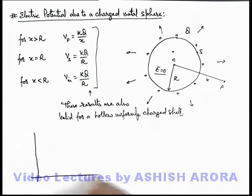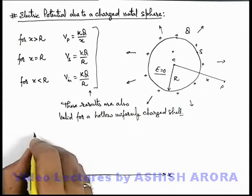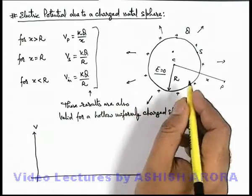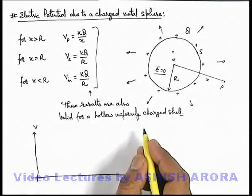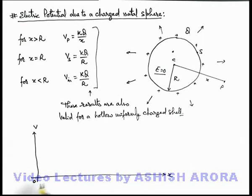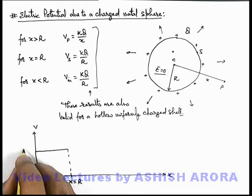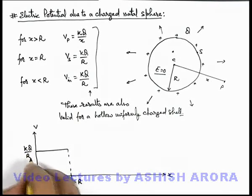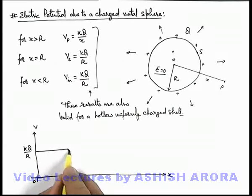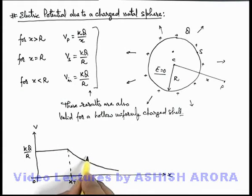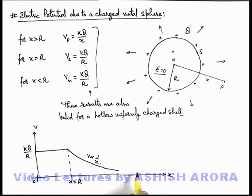If we just plot the variation of electric potential with position in the surrounding of the sphere or hollow shell, then from x equal to zero to x equal to r the electric potential remains constant at kq/r. And outside it will decrease inversely with position, so we can write V inversely proportional to x as the variation curve, which we get when plotted as a function of distance from the center.